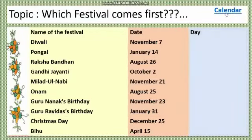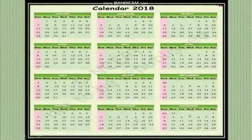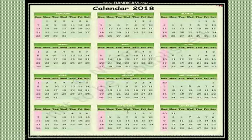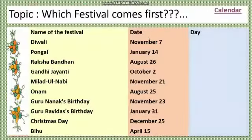Let's see on a calendar — November 7th. This is your month, November. The date is 7th. Which day is this? You can see which day — Wednesday. So, 7th November is Wednesday. Your first blank answer is Wednesday.